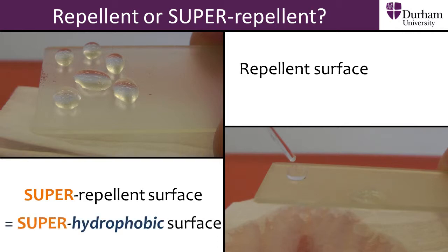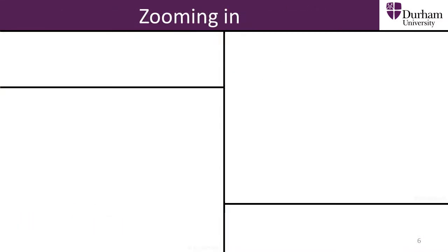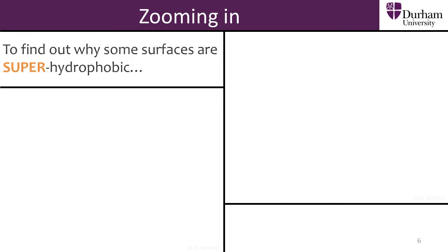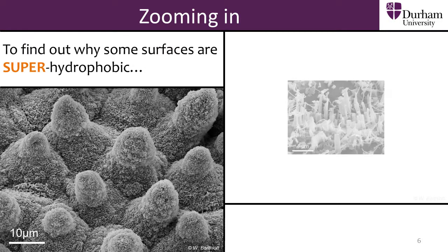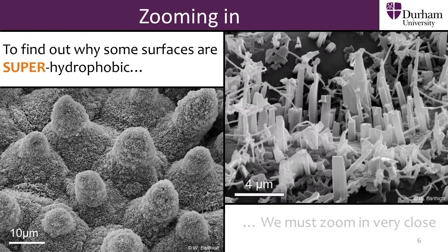Scientists also refer to super repellent surfaces as super hydrophobic surfaces. We can only see the reason why some surfaces are super hydrophobic if we look at them at over a million times zoom.